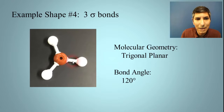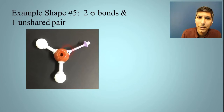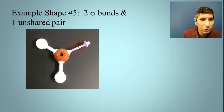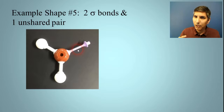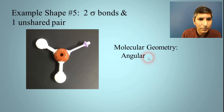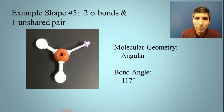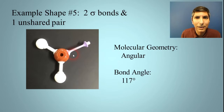What happens if we replace one of those bonds with an unshared pair? It's still planar — flat — but the invisible unshared pair exerts repulsion, pushing the other two bonds a little closer together. So now we have a structure called angular, with a bond angle of about 117 degrees. Two sigma bonds with one unshared pair gives an angular geometry at 117 degrees.